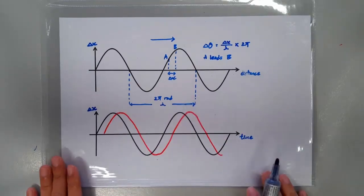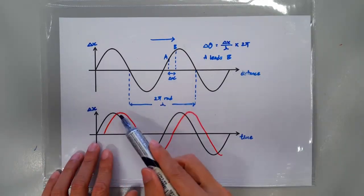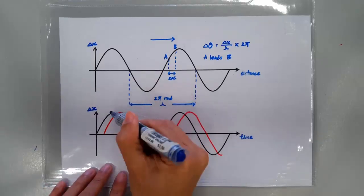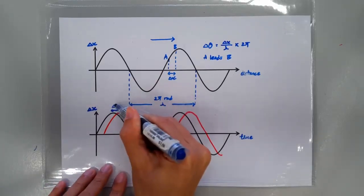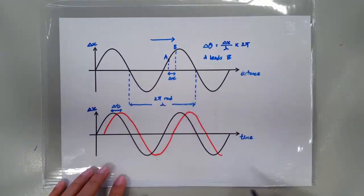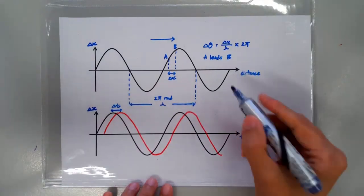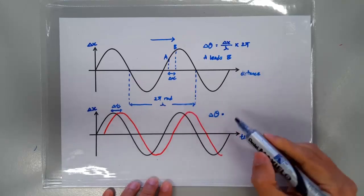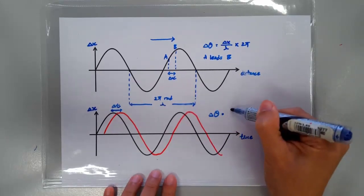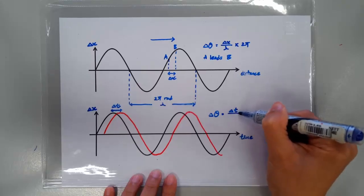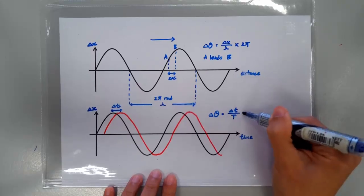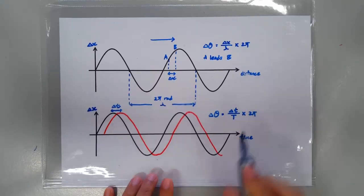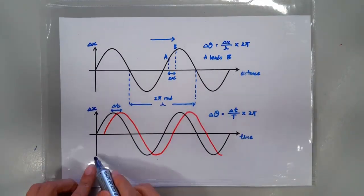So, in general, if you have two oscillations that are misaligned by Δt, then the phase difference between these two oscillations can be calculated by Δθ, which is the phase difference being equal to Δt divided by one period times 2π. So, you can tell the period from the graph.